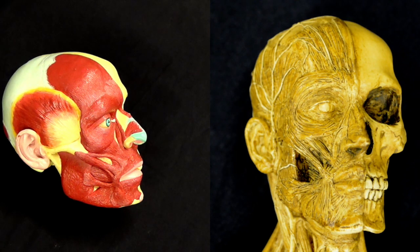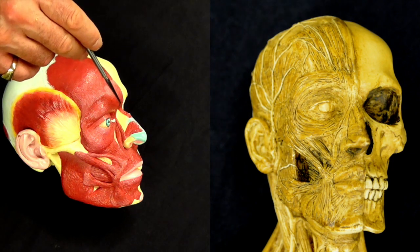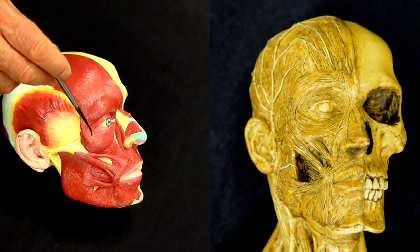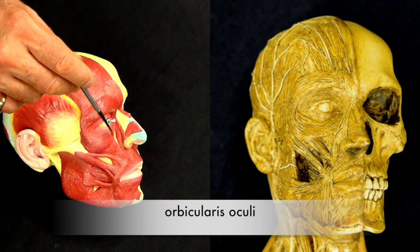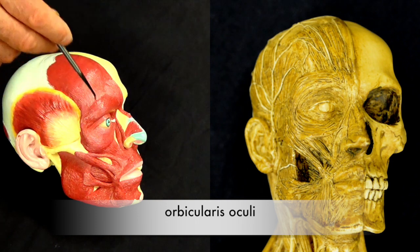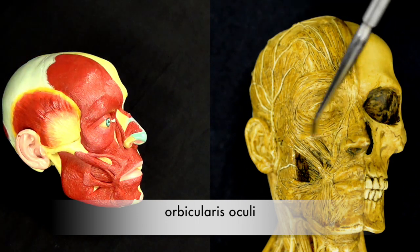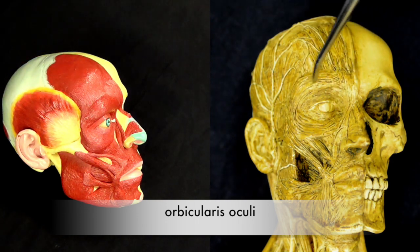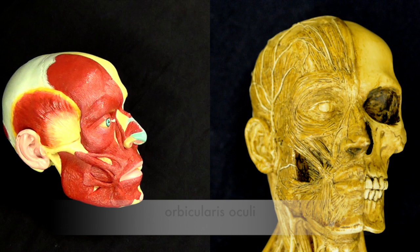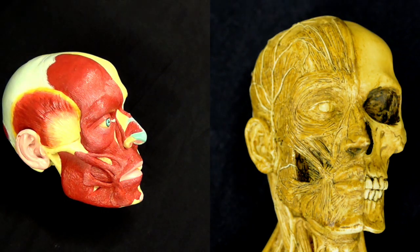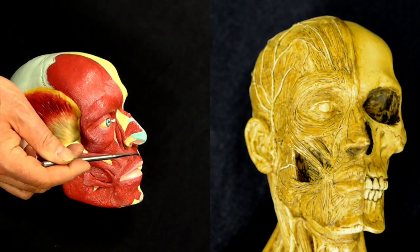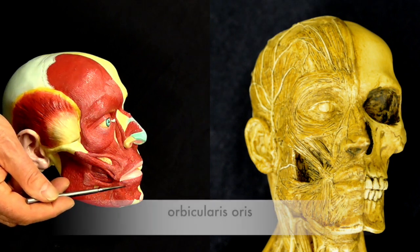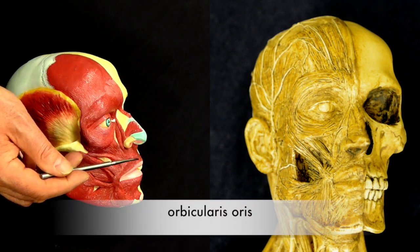First we're going to look at two sphincter muscles. This round muscle that surrounds the eye is called the orbicularis oculi, and on this model we can see it here. Next we have another sphincter muscle that surrounds the mouth called the orbicularis oris.